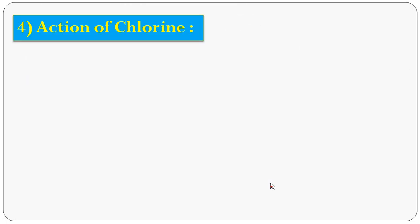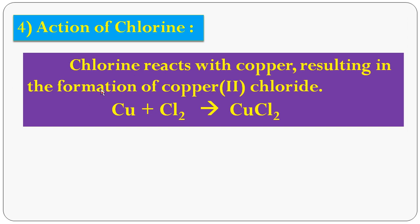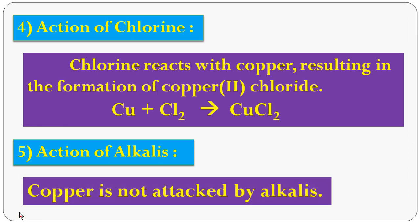The fourth chemical property is action of chlorine: copper reacts with chlorine to form copper(II) chloride, CuCl₂. The fifth chemical property is action of alkalis (NaOH): copper does not react with alkalis. So the five chemical properties of copper are: (1) action of air and moisture, (2) action of heat, (3) reaction with acids, (4) action of chlorine, (5) action of alkalis — no reaction with alkalis.